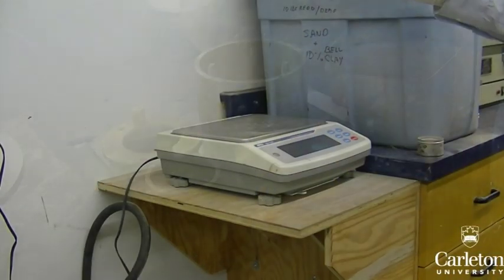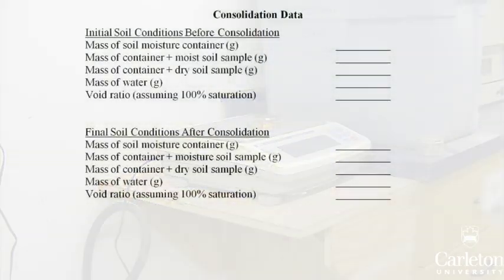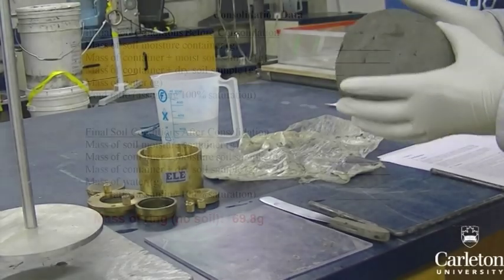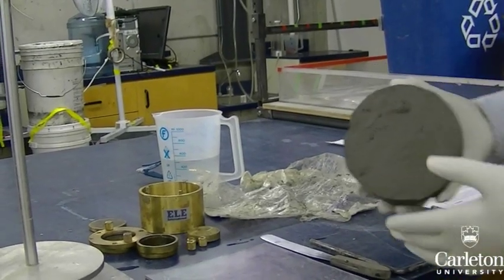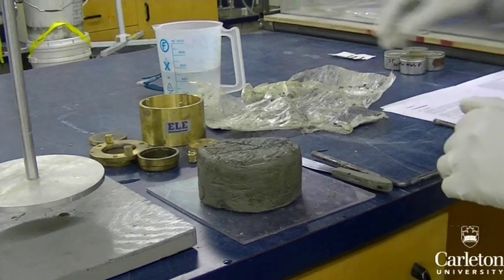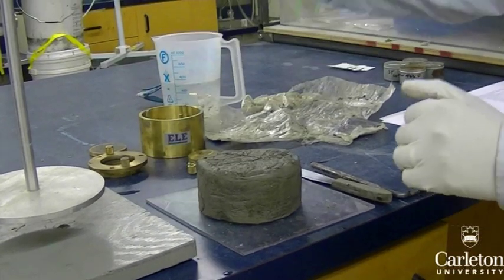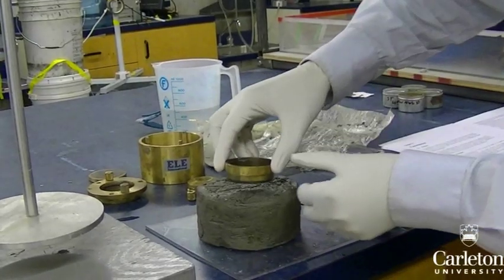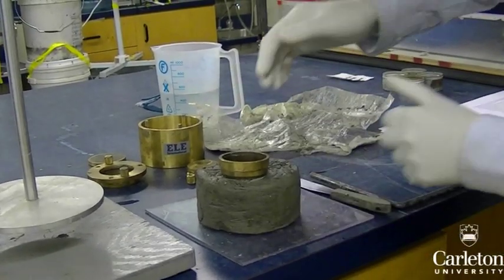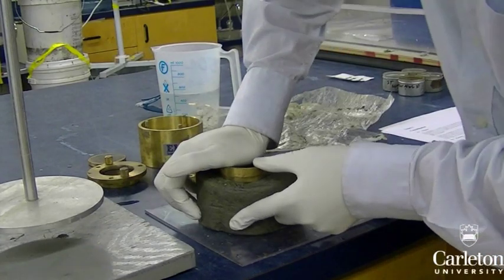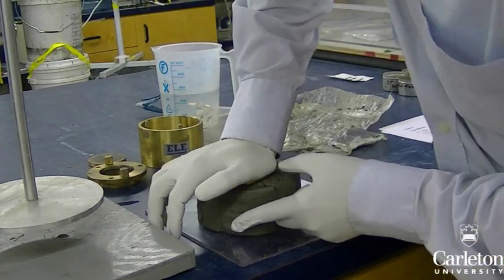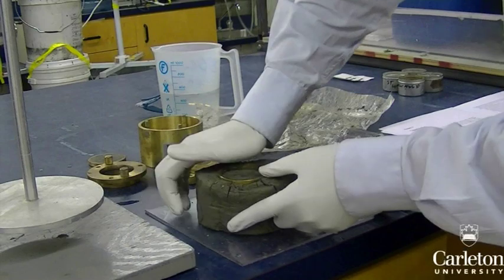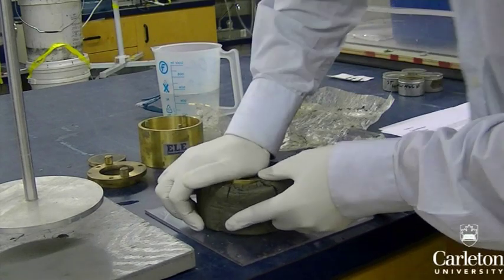Before you begin, record the mass of the ring. Now obtain a sample of clay — this core sample was obtained from the field through site investigation. Place the ring sharp edge down on a flat surface of the clay and push downwards. The sharp edge will cut out a cylinder of soil without deforming it.